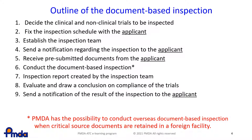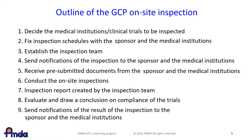This is the overall flow of a document-based inspection. The outline of an on-site inspection by PMDA is similar to document-based inspections. The differences between these two types of inspections are underlined. In an on-site inspection, the scope of the inspection is both the sponsors and the medical institutions, and the trials to be inspected are limited to clinical trials. On the other hand, in a document-based inspection, the scope of the inspection is limited to the applicants, and the trials to be inspected include clinical and non-clinical trials.